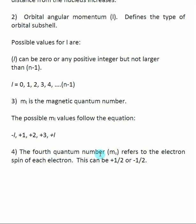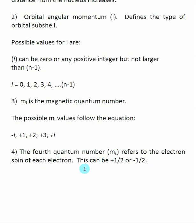The fourth quantum number is called M sub S, and it refers to what is called electron spin — a directional property. Electrons can either be spin up or spin down. Spin up is plus one half, and spin down is minus one half. M sub S only has two possible values: plus one half or minus one half. Spin produces certain properties inside of elements, and we'll find out more rules about this later on.